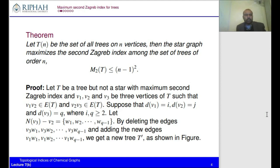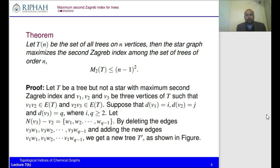This is the theorem we are going to prove, and we will discuss the technique for finding extremal values for topological indices. The theorem states: let T_n be the set of all trees on n vertices. Then the star graph maximizes the second Zagreb index among all trees of order n, and this maximum value is (n−1)².